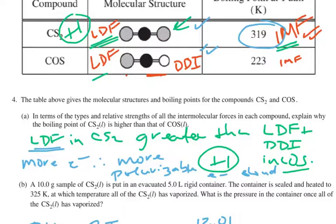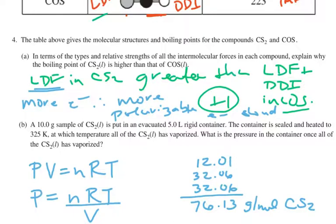The third question goes here, and it says, okay, a 10-gram sample of CS2 in an evacuated 5-liter rigid container, that's a volume, at 325 Kelvin, that's a temperature, and what is the pressure in the container once everything has vaporized? So, that sounds suspiciously like PV equals nRT. We're asking for a P, we're given a volume. We have grams, we can change that into moles, R is a constant, and we're given temperature.